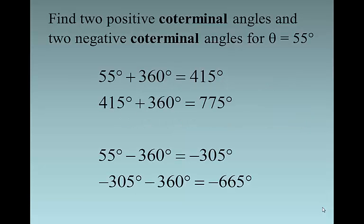And then if I want negative coterminal angles, I simply subtract 360. So 55 degrees minus 360 is negative 305, and negative 305 minus another 360 is negative 665 degrees. So 55 degrees, 415 degrees, 775 degrees, negative 305 degrees, negative 665 degrees are all coterminal. And there's an infinite number of angles that are coterminal to 55 degrees.